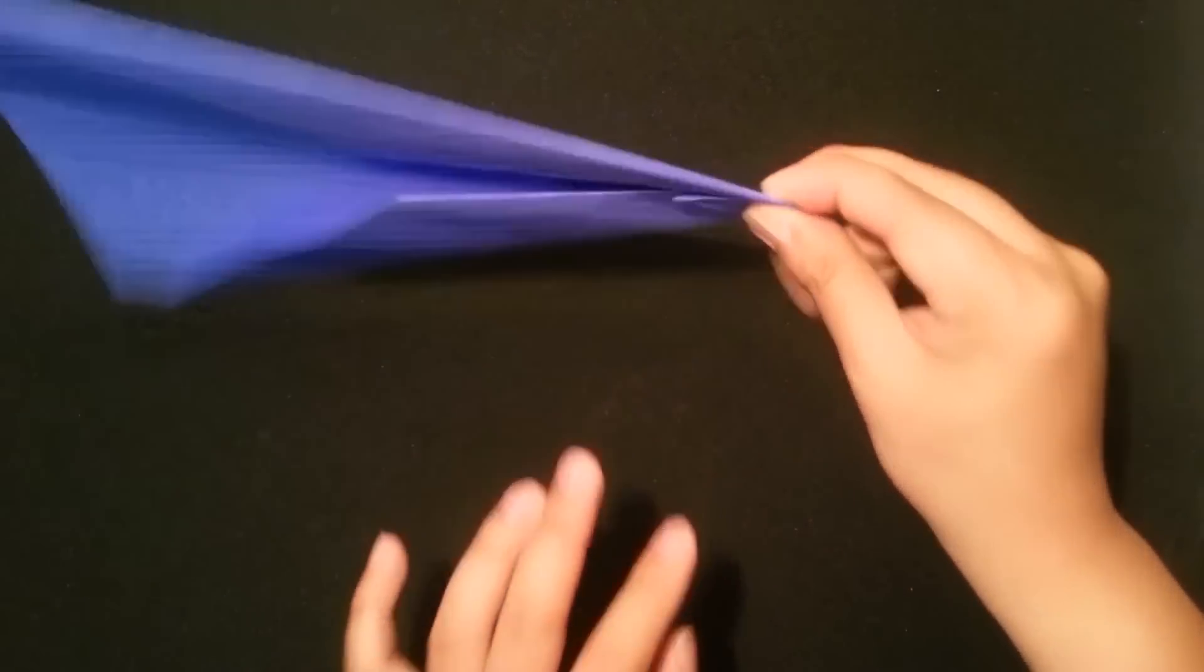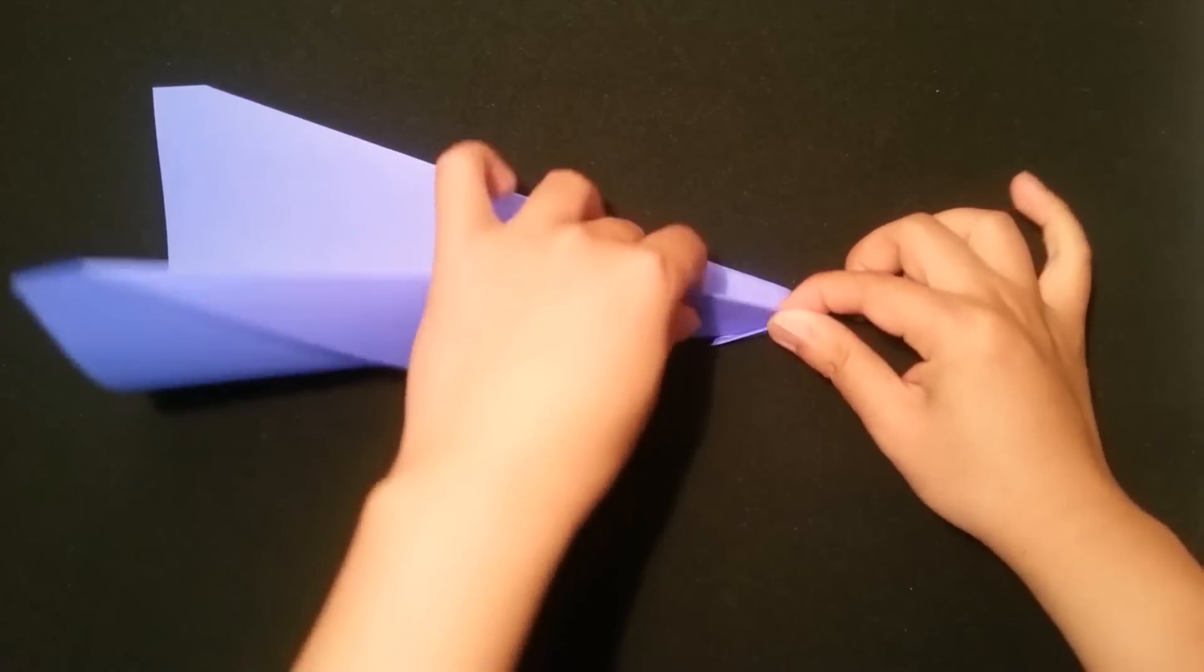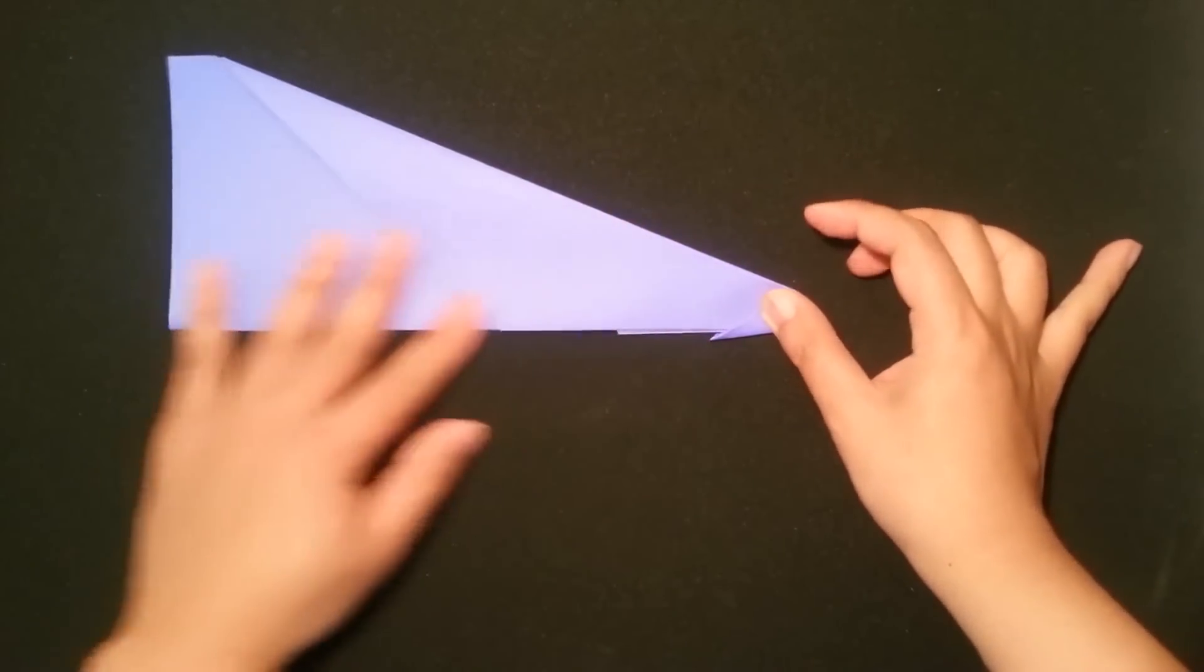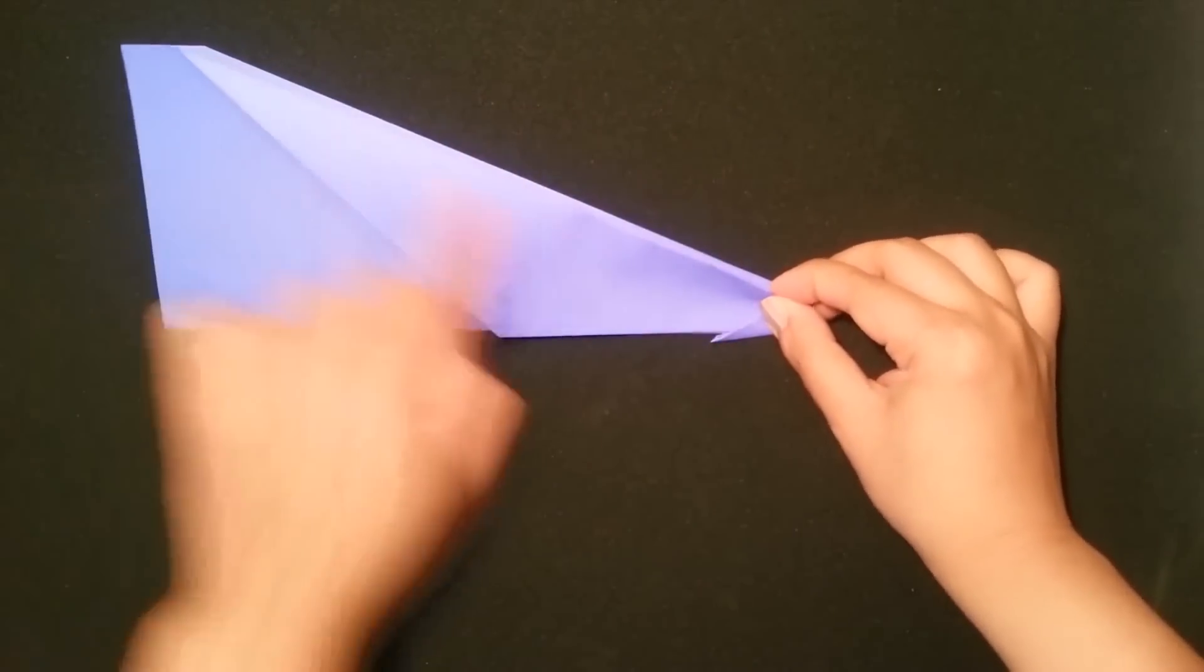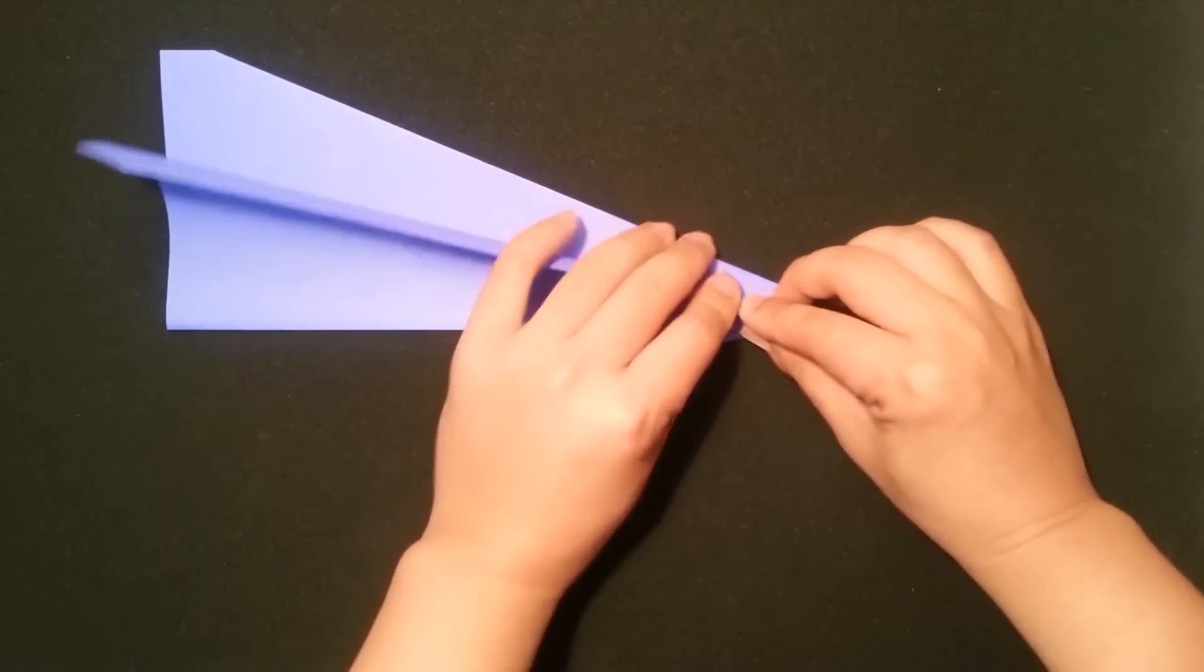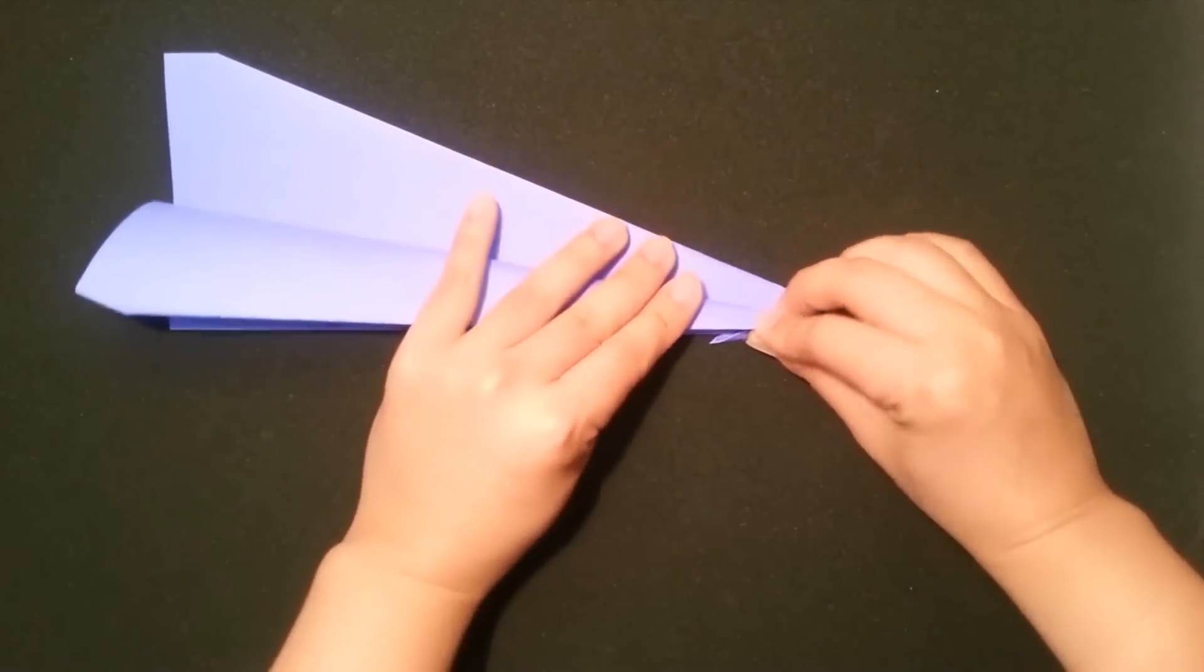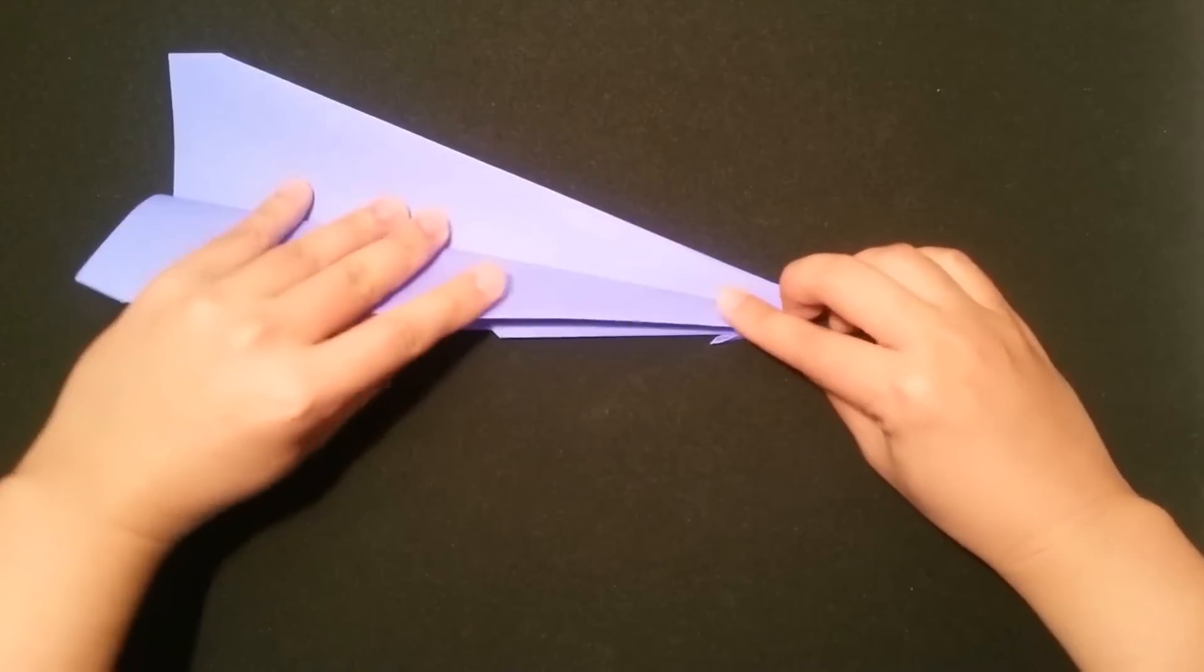Then I just turn the paper over, fold the paper in half. Now you can create the wings. Start from this edge, fold it to the edge on the bottom here. Very simple.